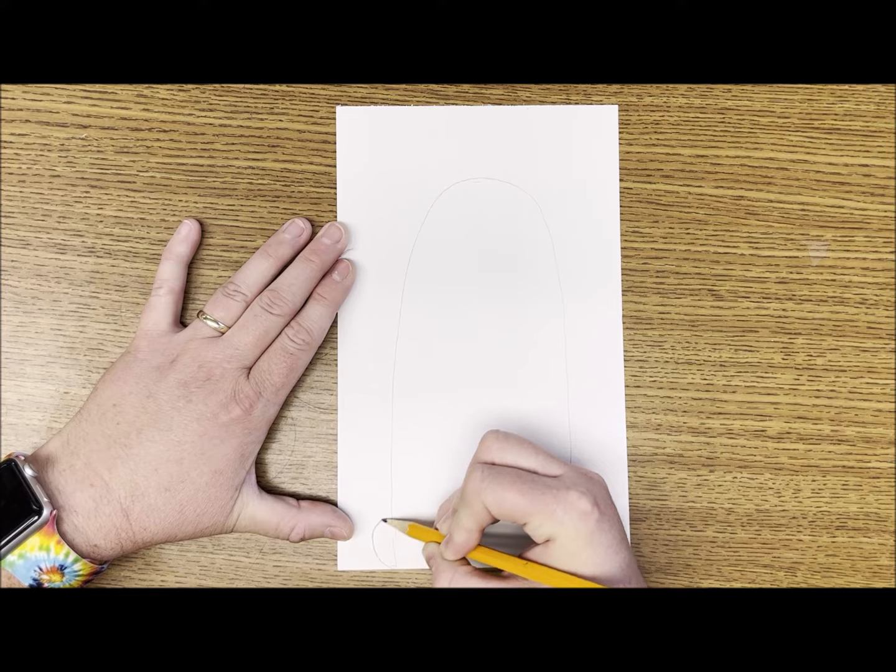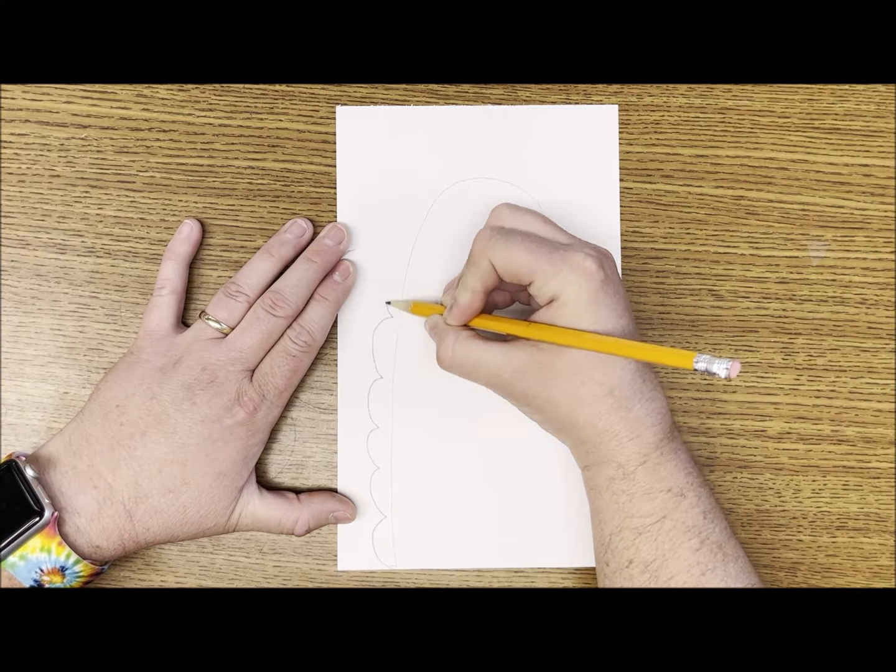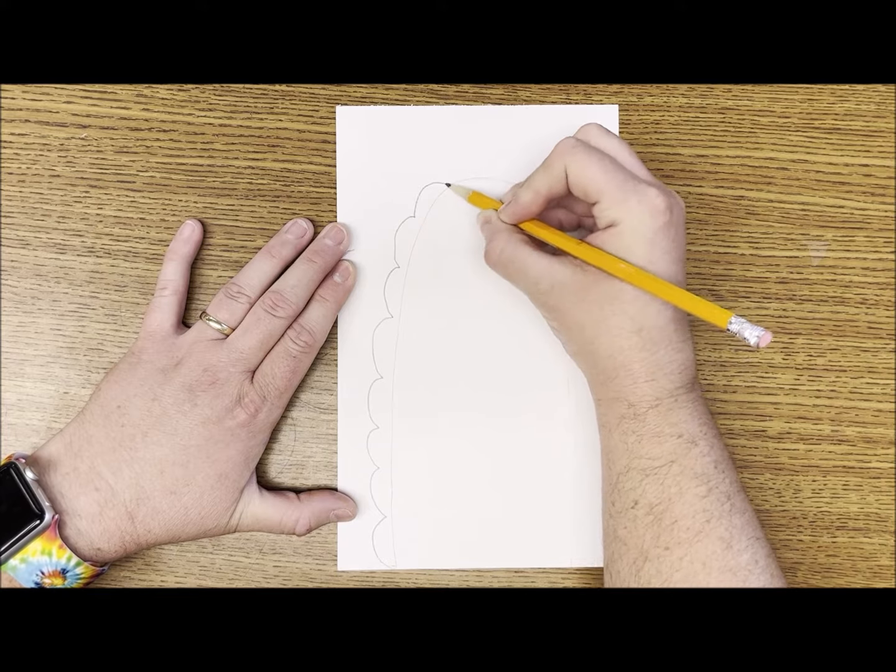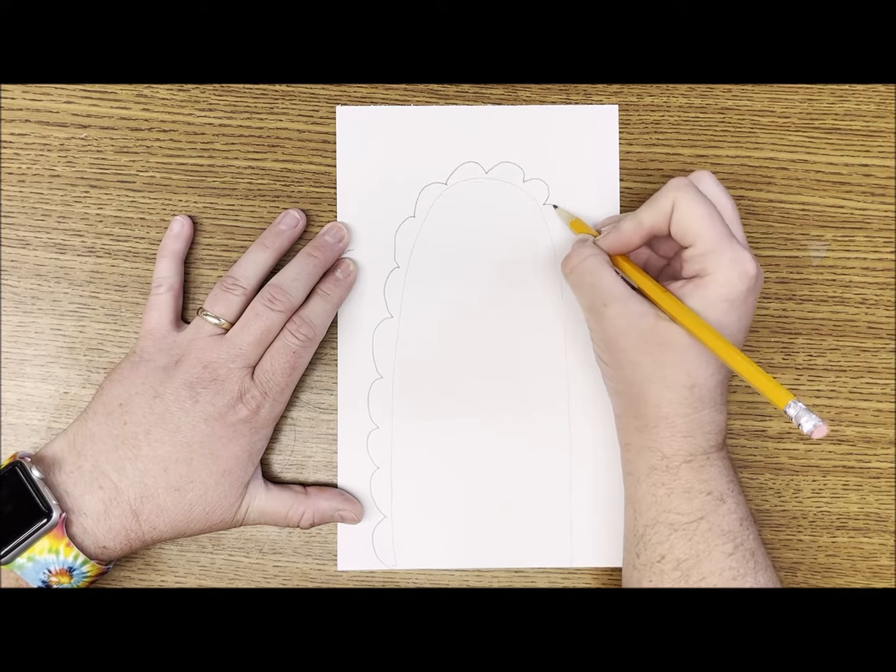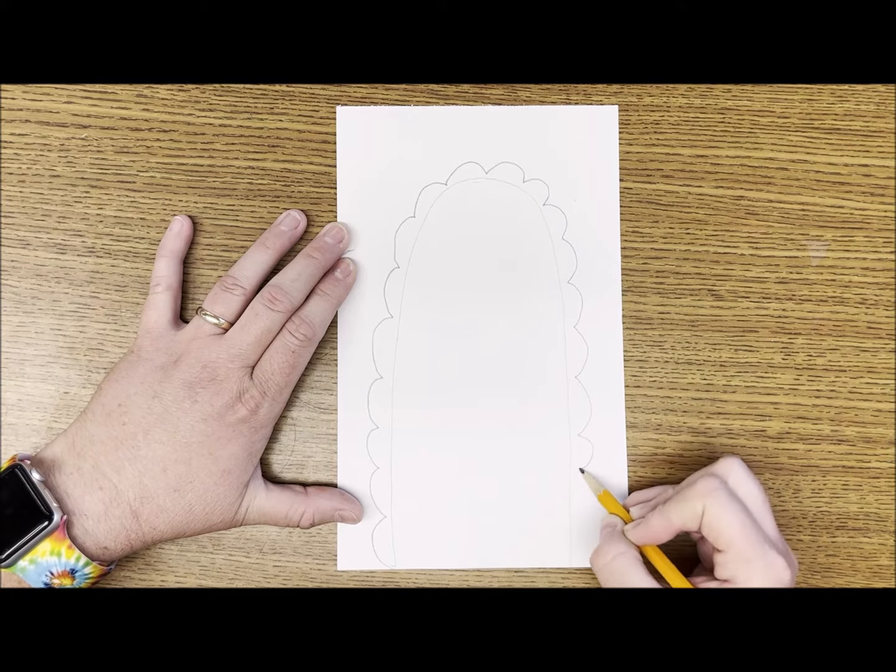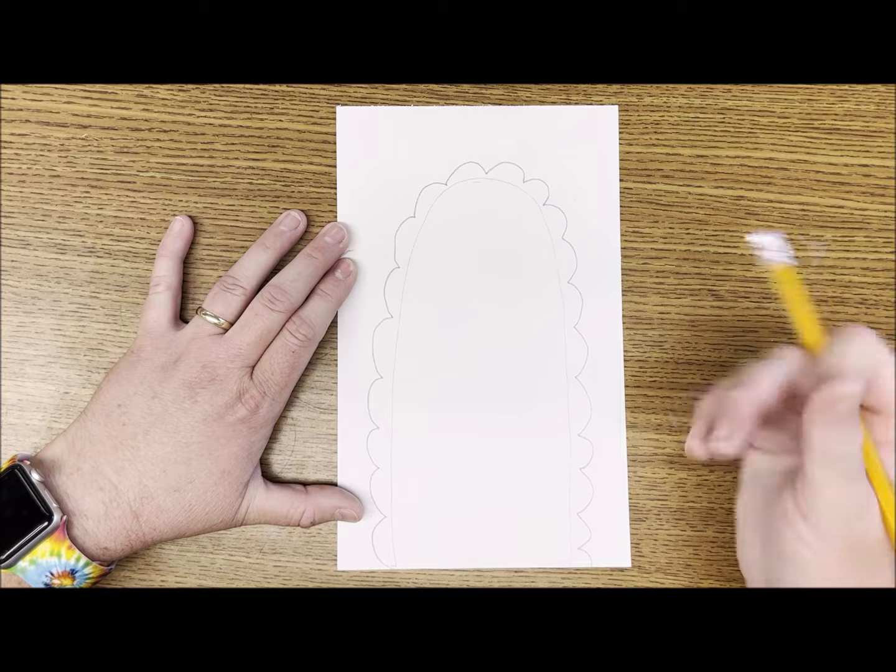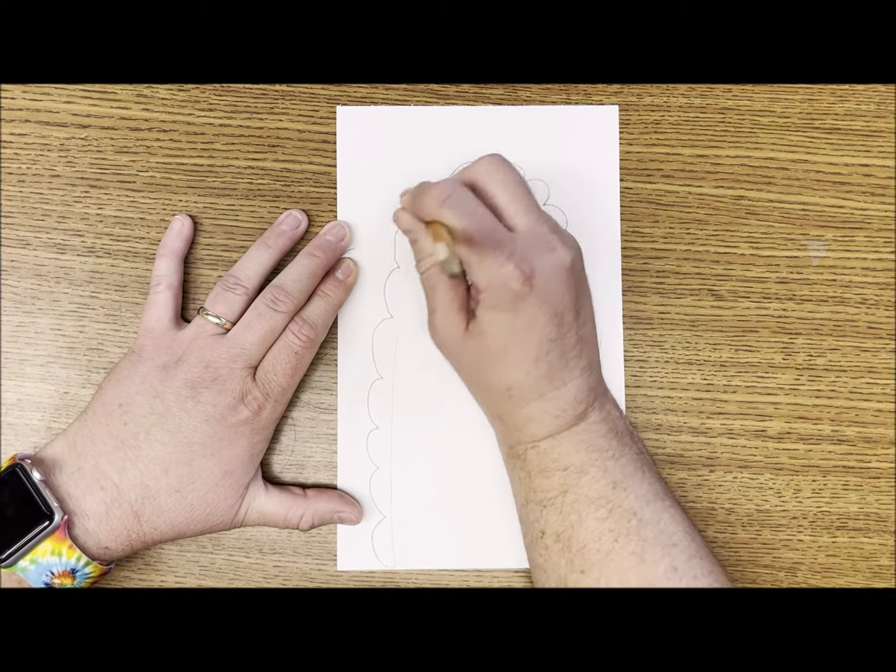Now I'm going to do a bubble line around my large arch line. This is to make the llama look fluffy. Now that I have the bubble line all the way around the arch, I'm going to erase that light arch line.